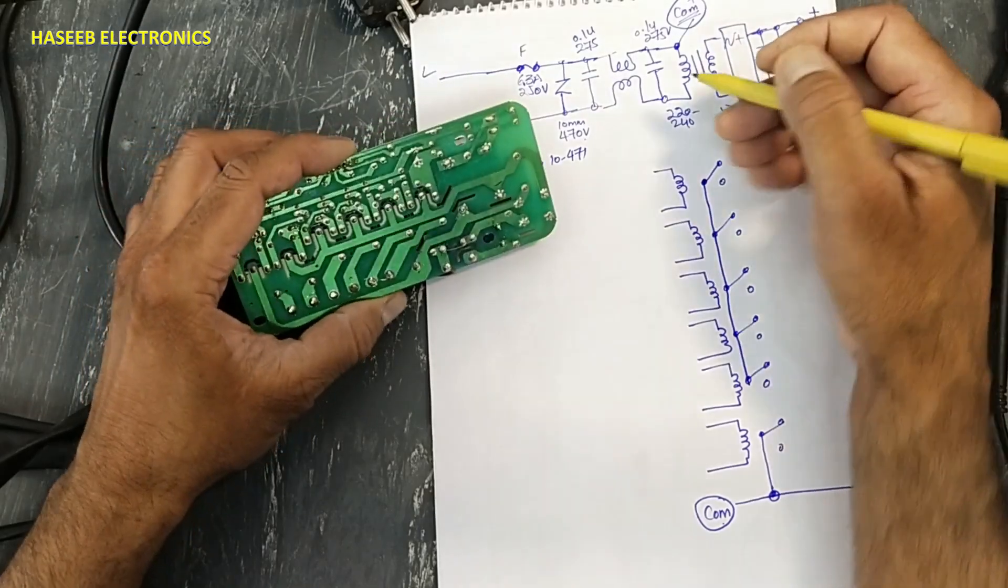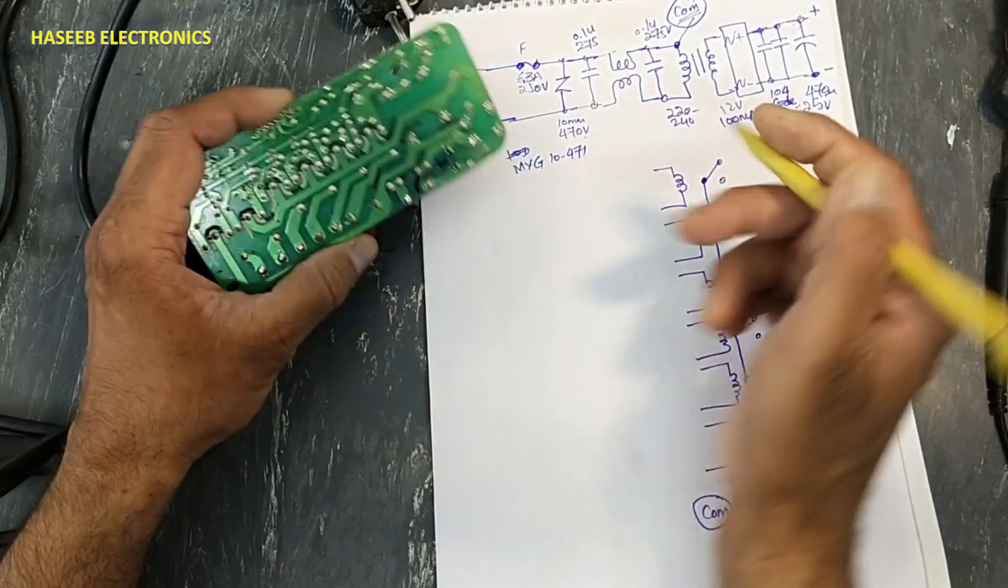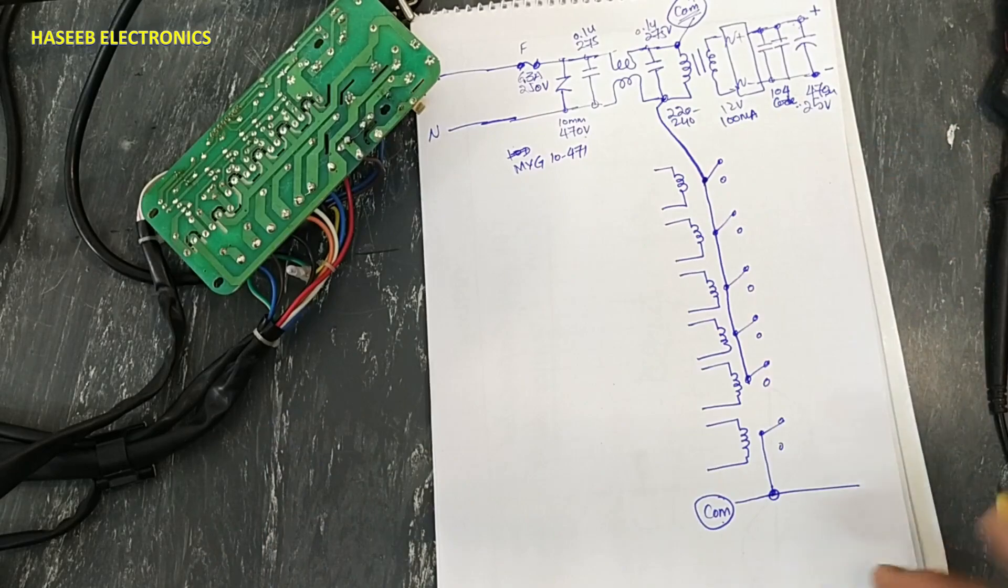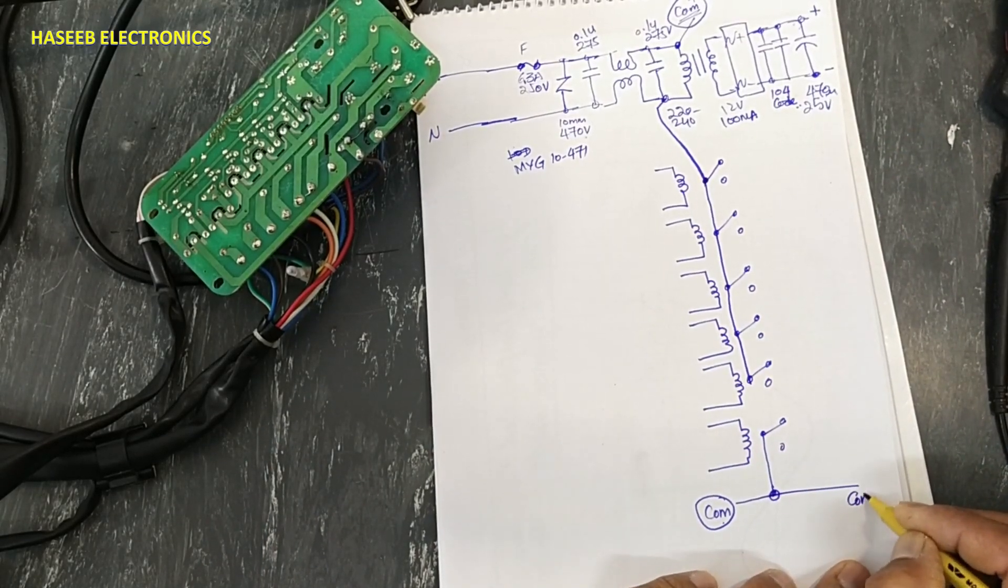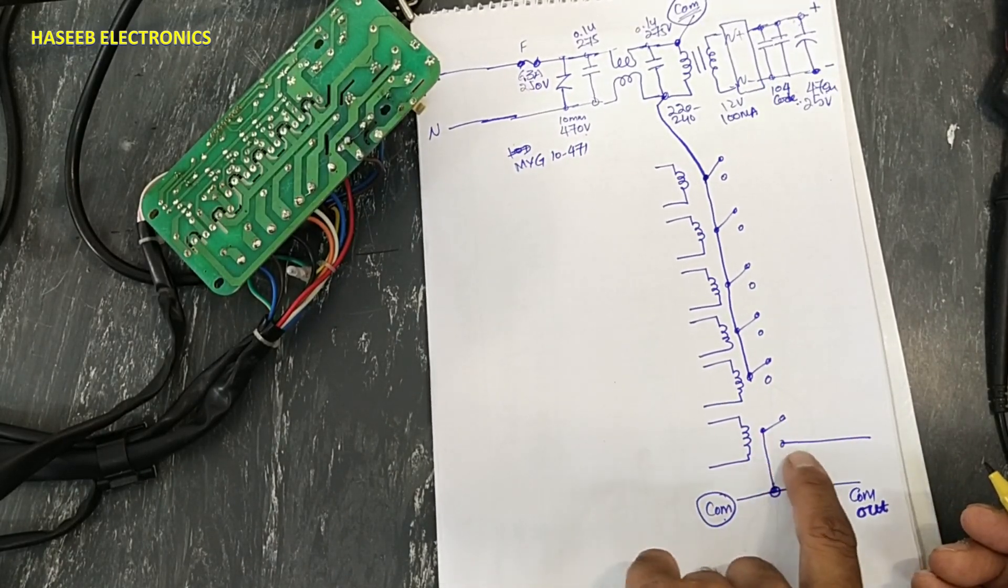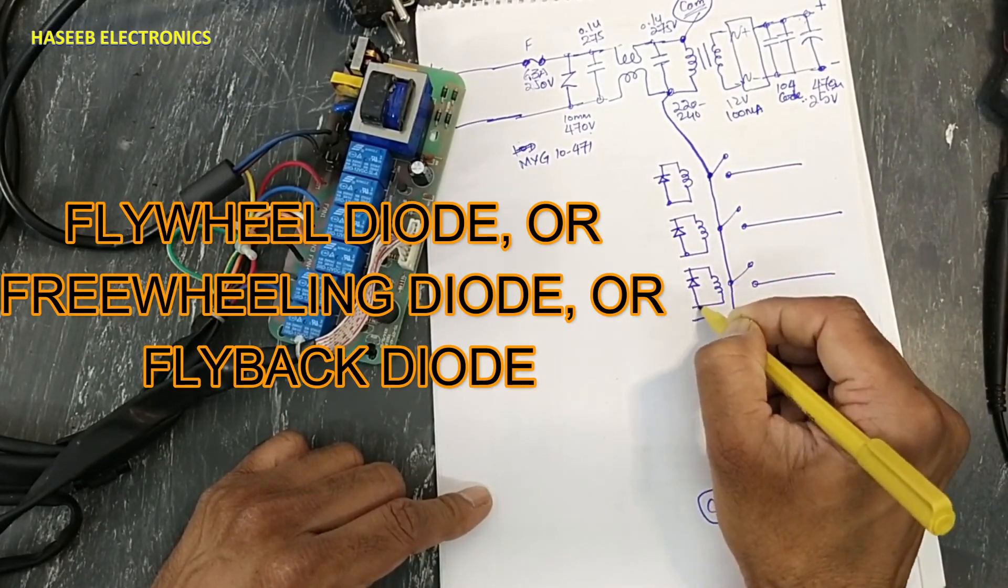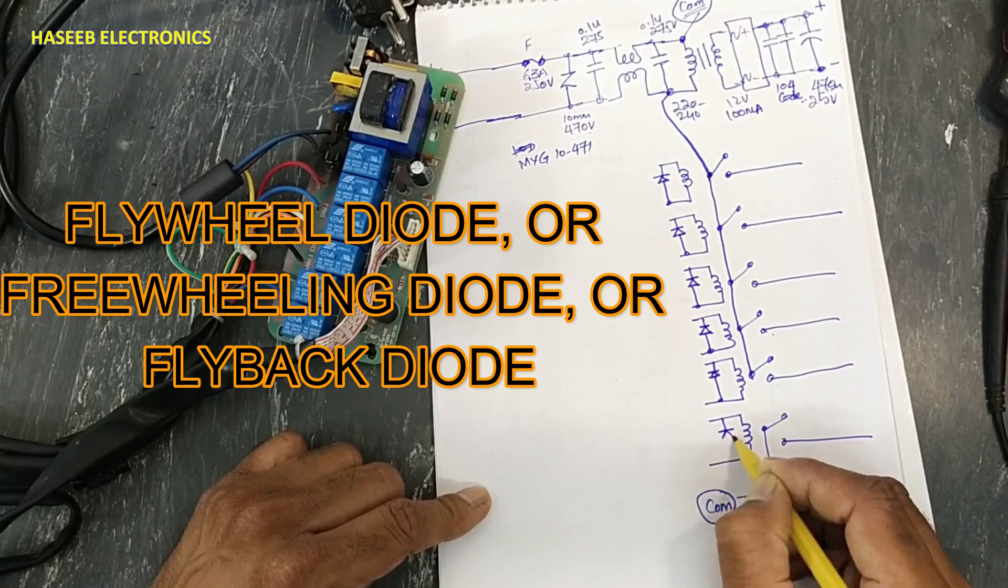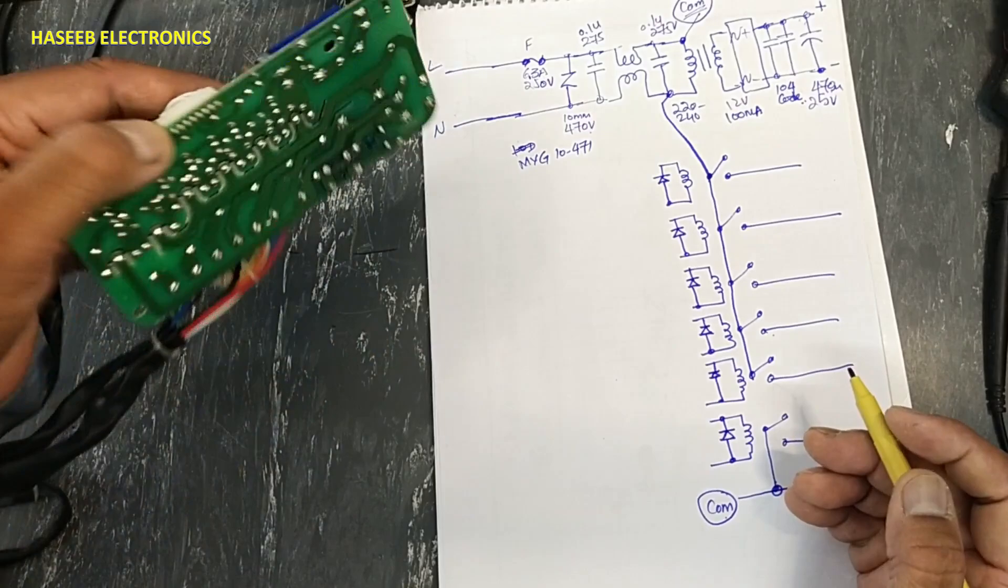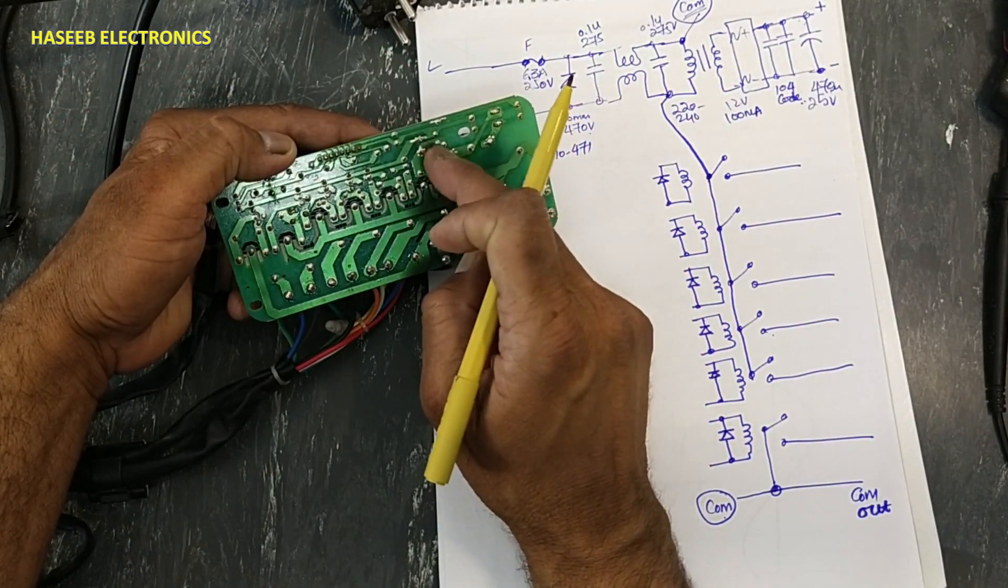These are connected to this point that is coming outside from this dual line filter, from this point. It is coming out. When this relay turns on, it will provide this switched common. All cathode points are connected together, these points, and these are connected to positive voltage.